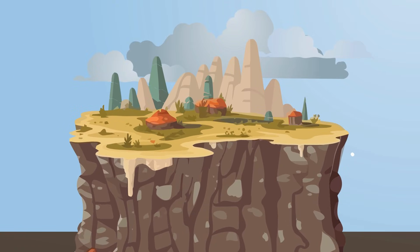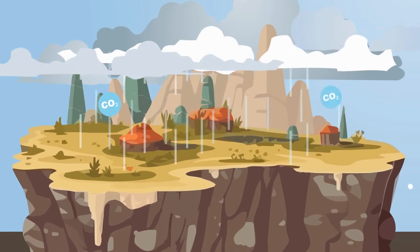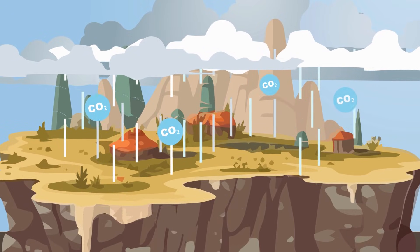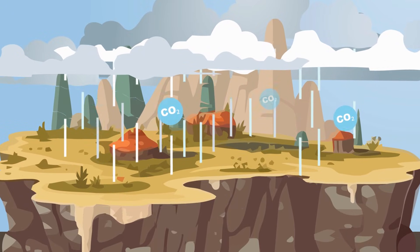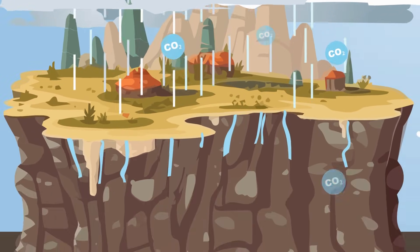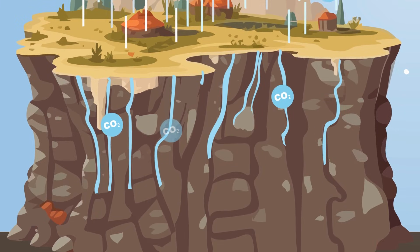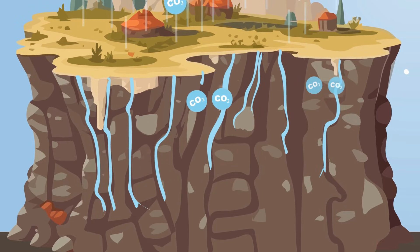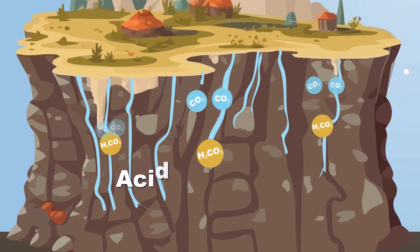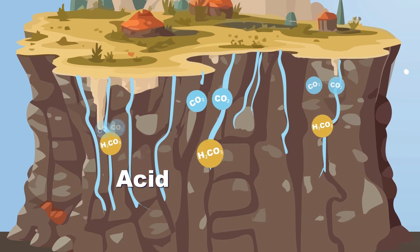Solution caves begin with droplets of rain. These droplets pick up carbon dioxide from the air. When these droplets seep into soil, they absorb more CO2 and form a weak carbonic acid in the soil they push through.